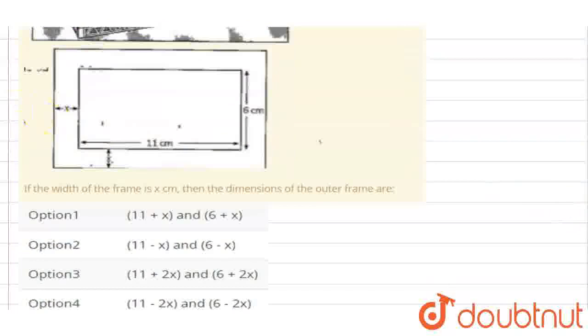And this is what is given, this is a diagram given, which is outer space width, which is x, and here is what is x. So if the width of the frame is x cm, then find the dimension of outer frame.